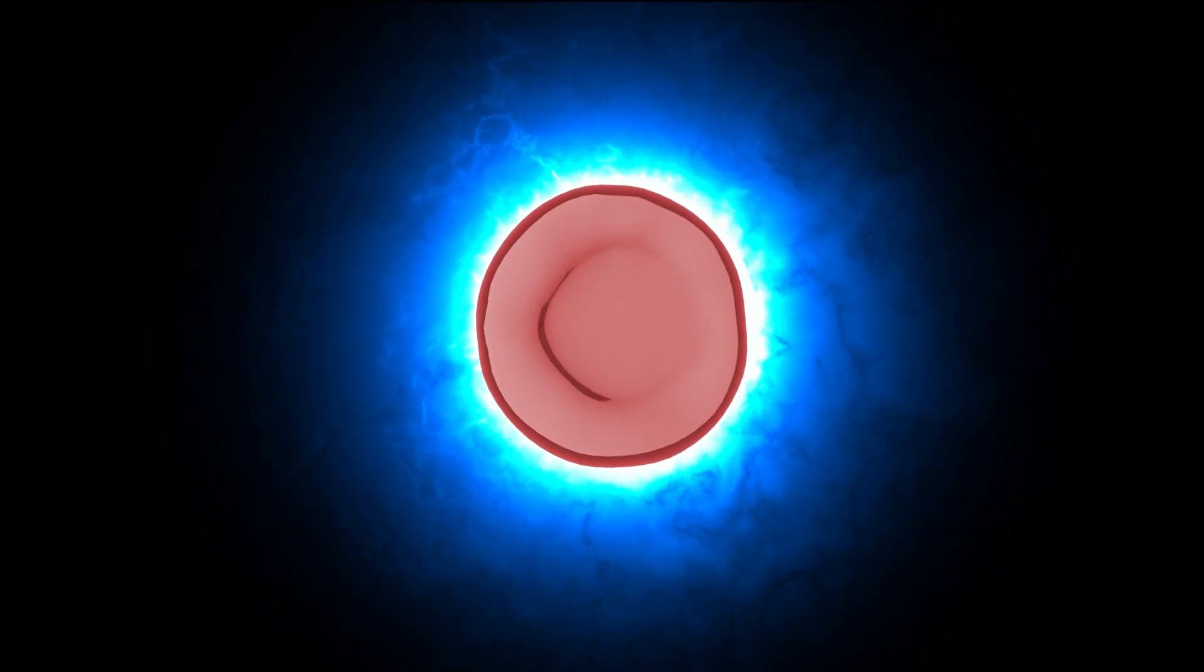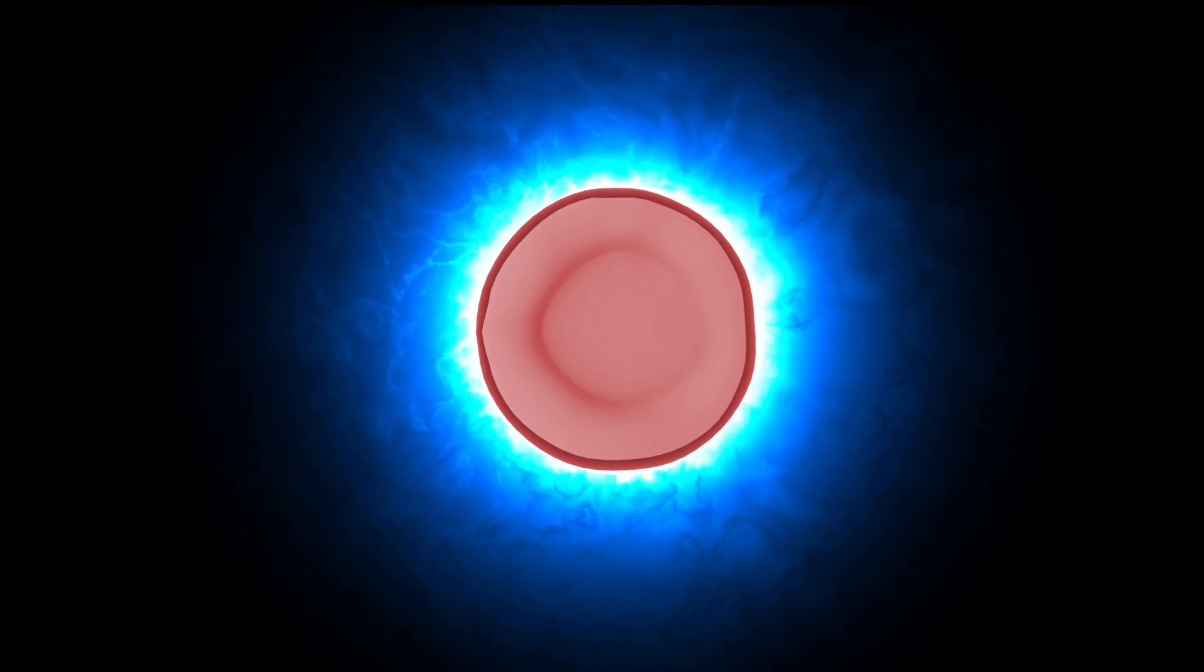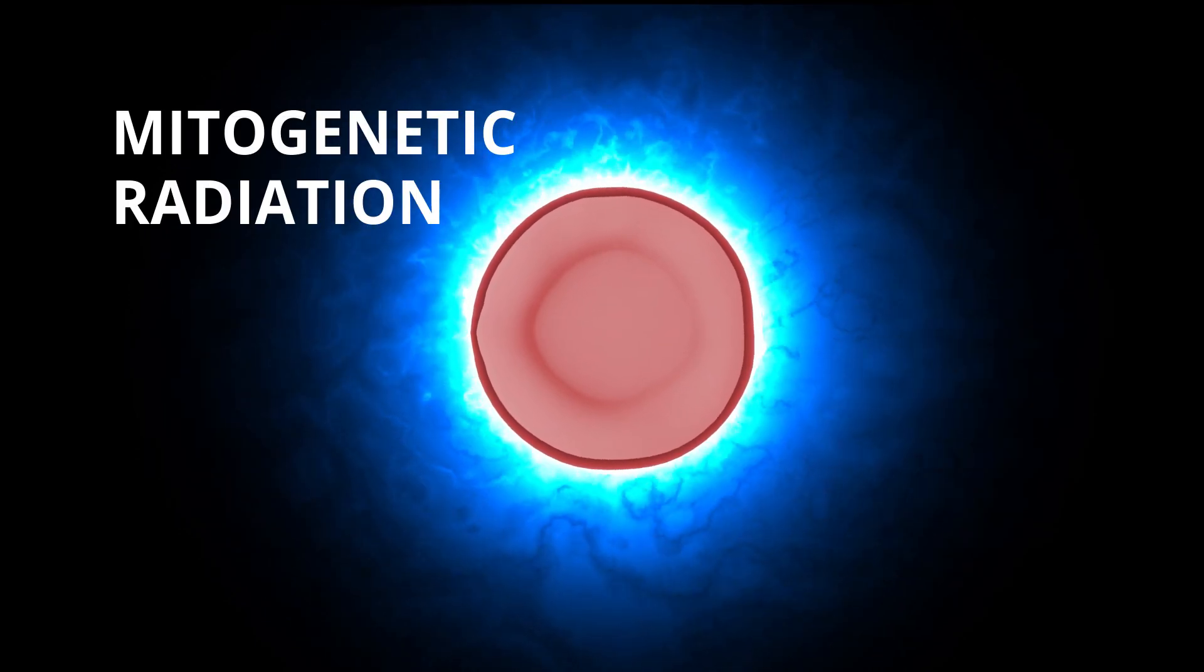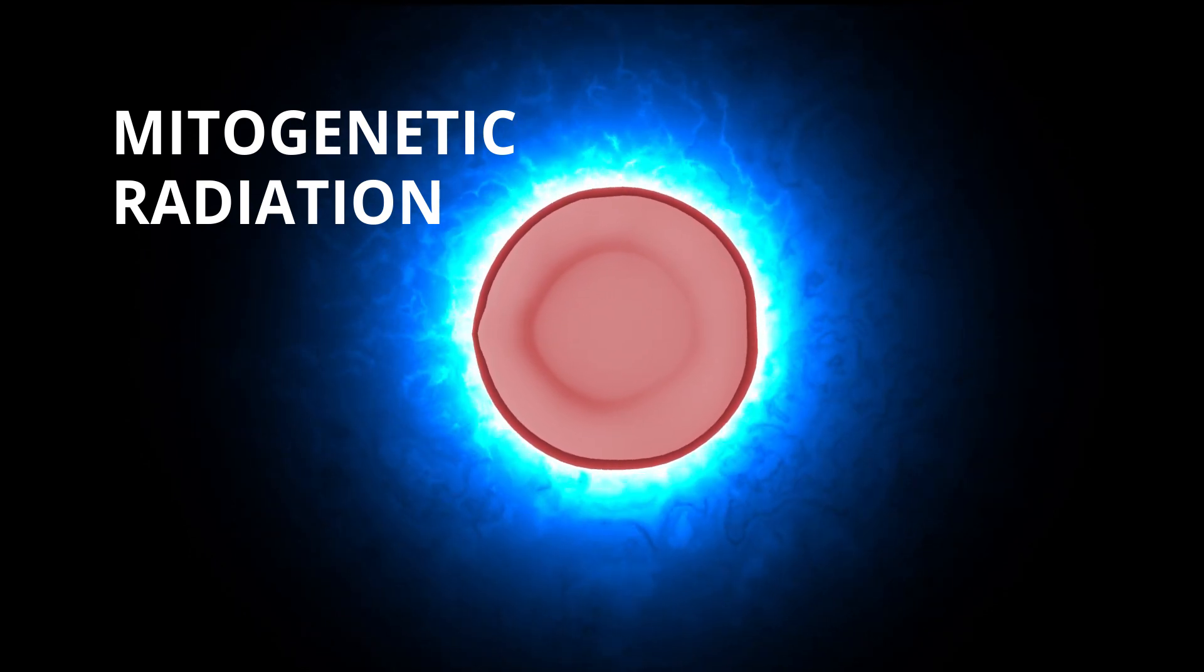The first study of cell radiation was made by Gerwitsch in 1920. He named this phenomenon mitogenetic radiation, and his study was the first to suggest that light emanation can play an important role in cell communication.